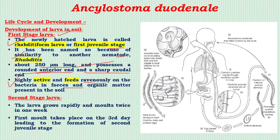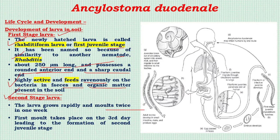This first juvenile stage rhabditiform larva is very active and feeds on bacteria present in fecal and organic matter in the soil. The larva grows rapidly and undergoes molting twice in a week. The first molting occurs on the third day, leading to the formation of the second juvenile stage.